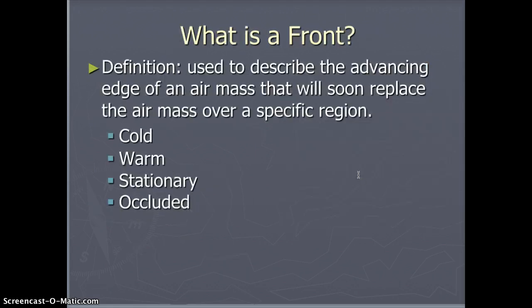Now we've talked about these air masses, and we need to talk about what is a front. A front is used to describe the advancing edge of an air mass that will soon replace the air mass that's here in this area. It could be cold, warm, stationary, or occluded — we'll go into these in greater depth in a moment.